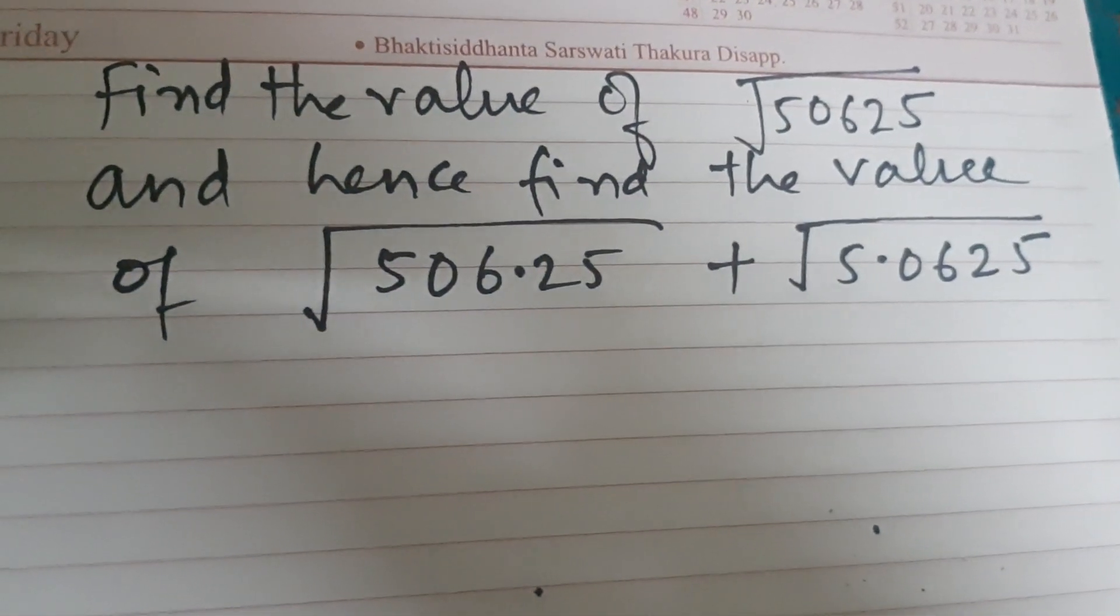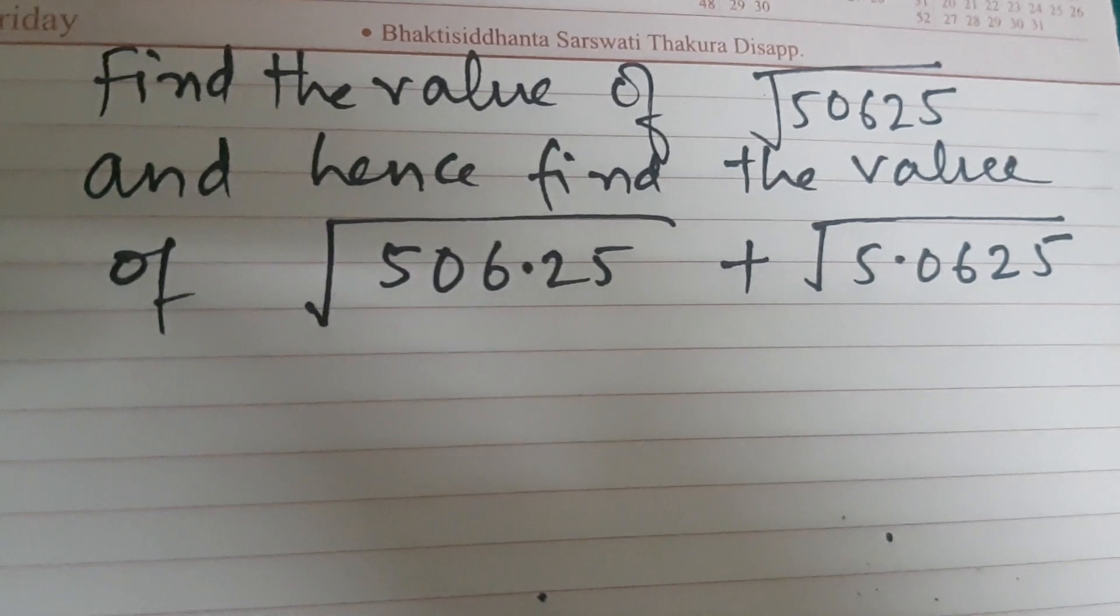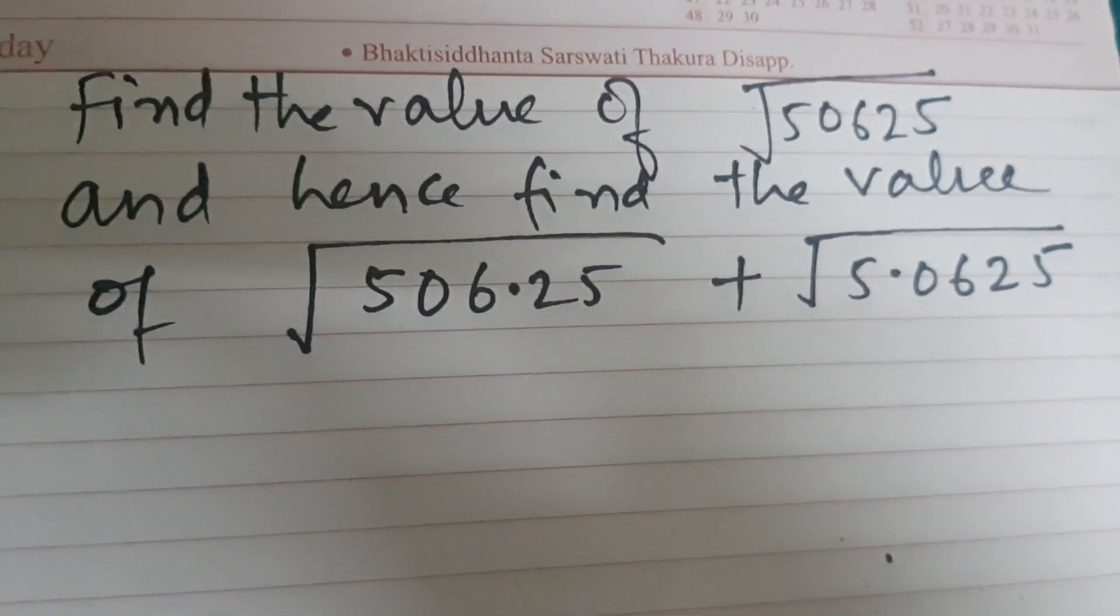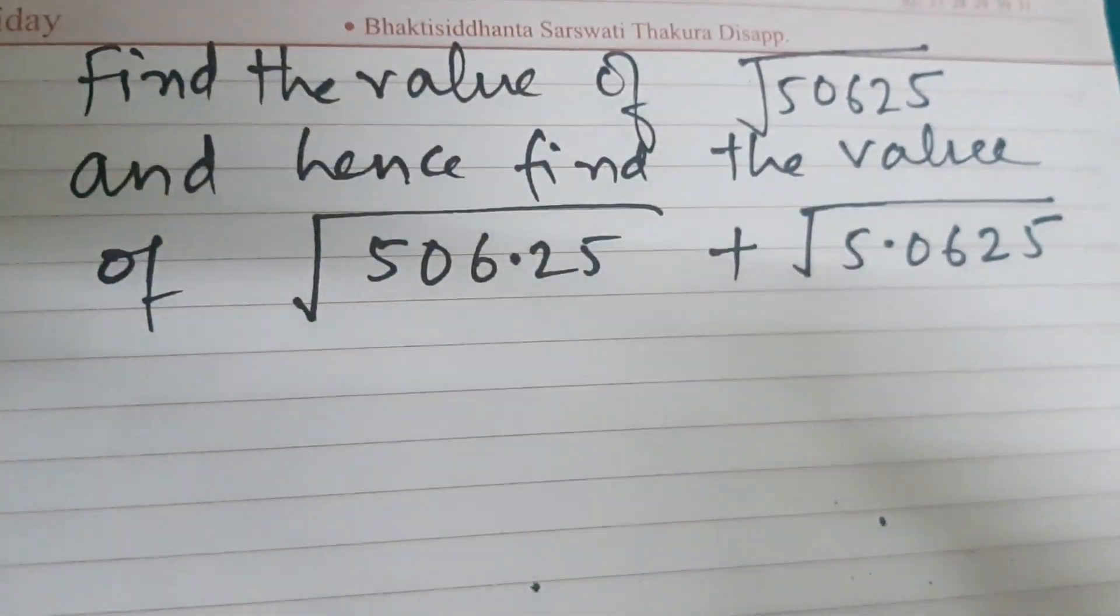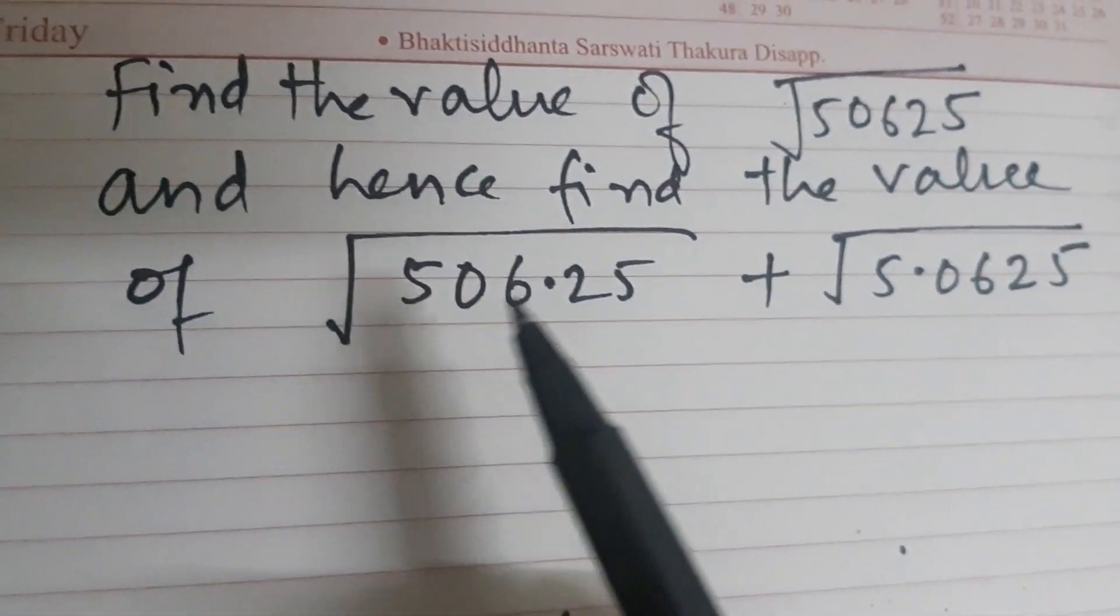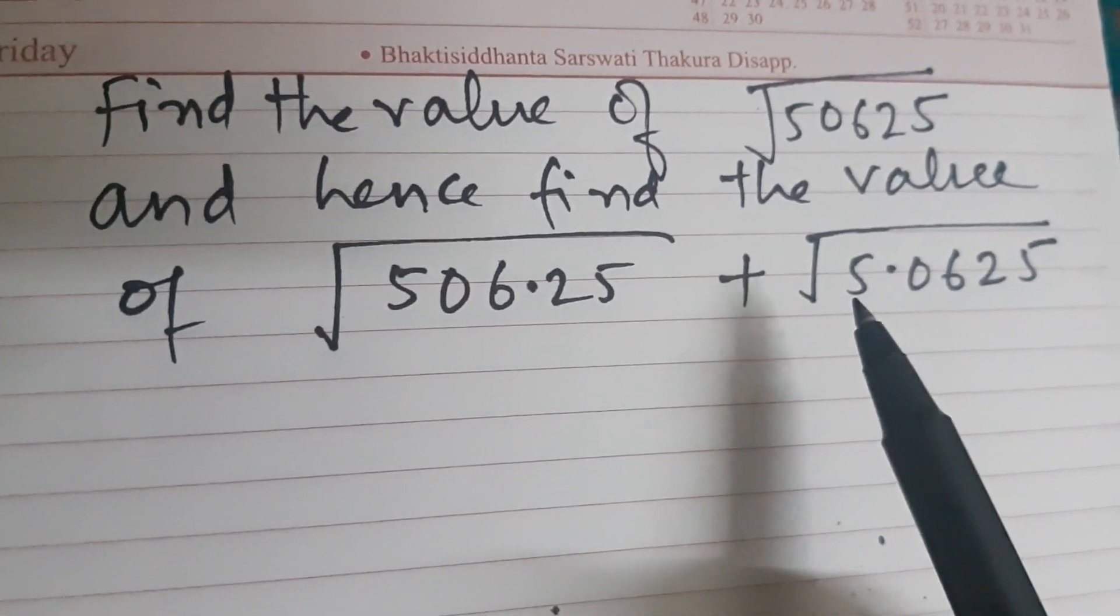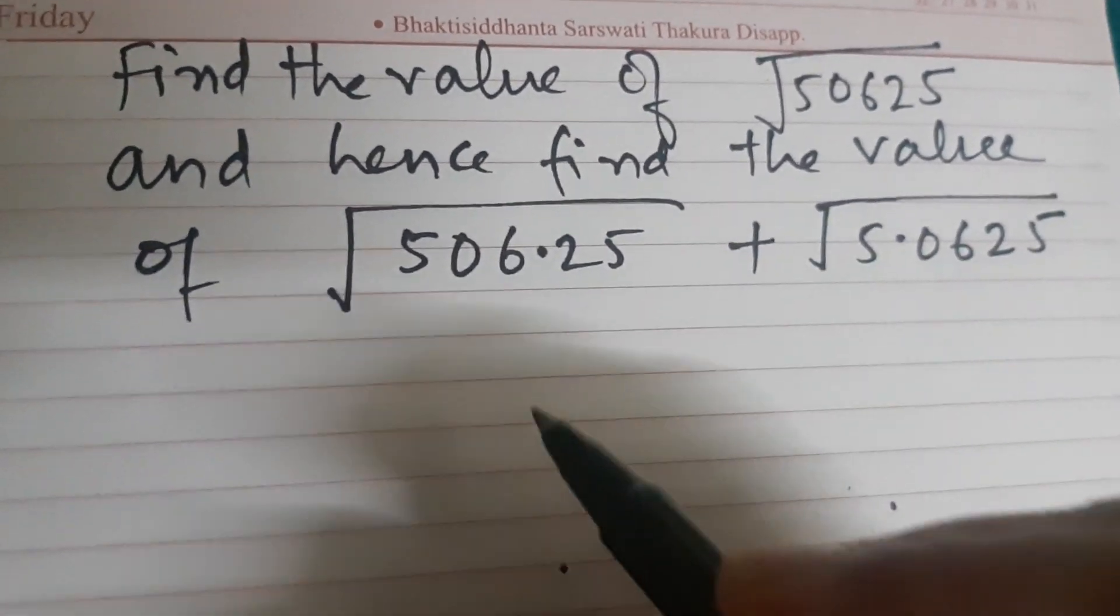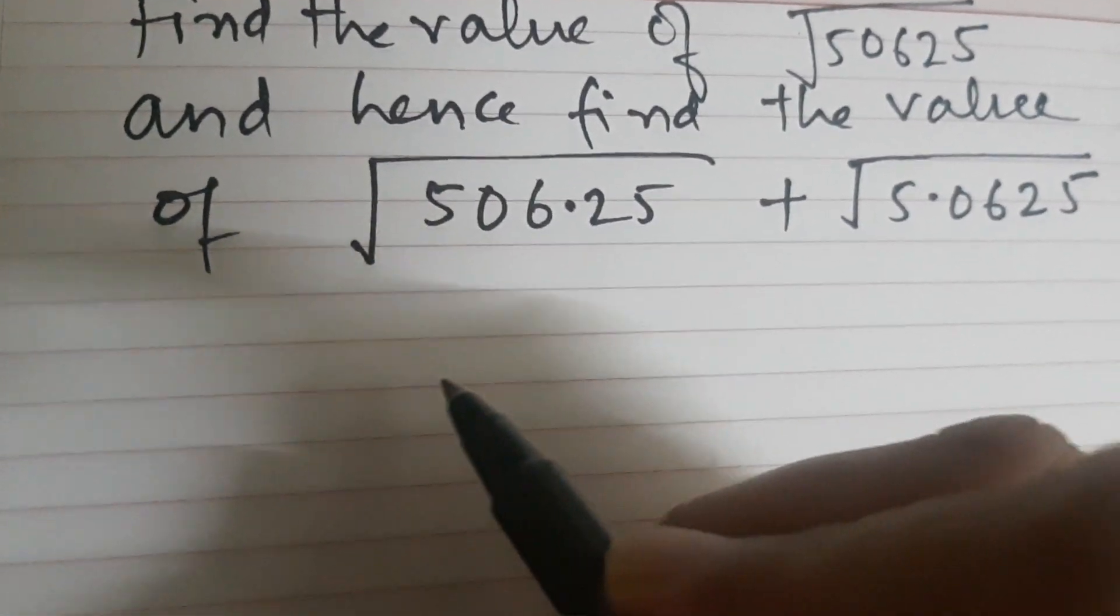Dear students, let us solve this interesting question. Find the value of square root of 50,625 and hence find the value of square root of 506.25 plus square root of 5.0625.